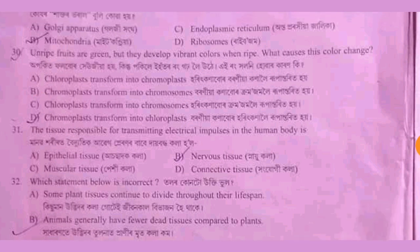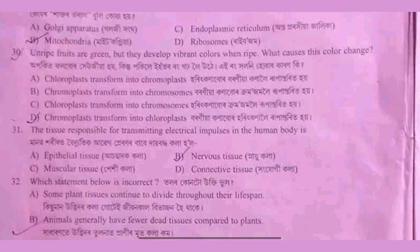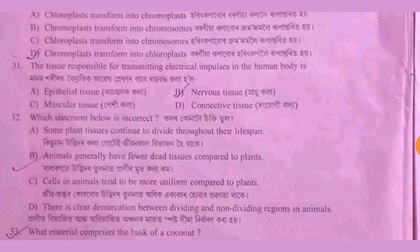The chloroplast transforms into chromoplast. Option A. This is the correct answer — chloroplast transforms into chromoplast. The tissue responsible for transmitting electrical impulses in the human body is nerve tissue.